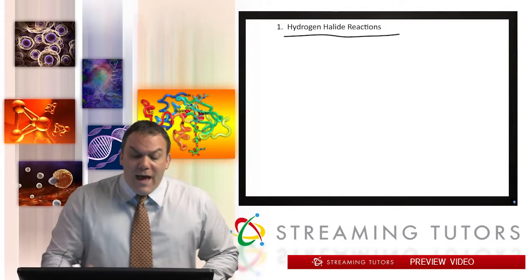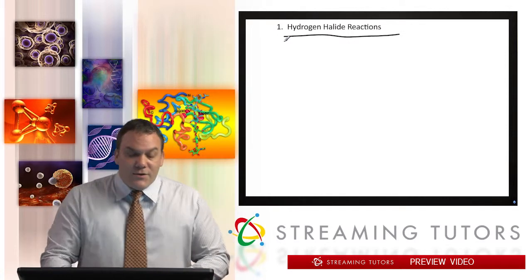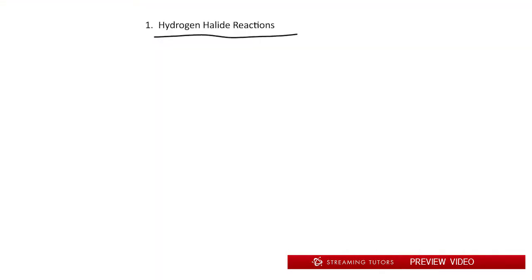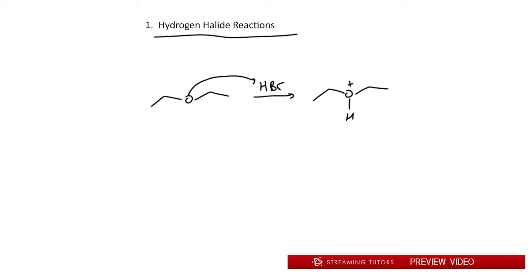What we have here is a hydrogen halide reaction. If you have an ether, the question is how can you break it apart? The way you break it apart is by using HX — for example, HBr. The general idea is that you protonate the oxygen using an acid, and then it's going to go through either an SN1 or SN2 attack.